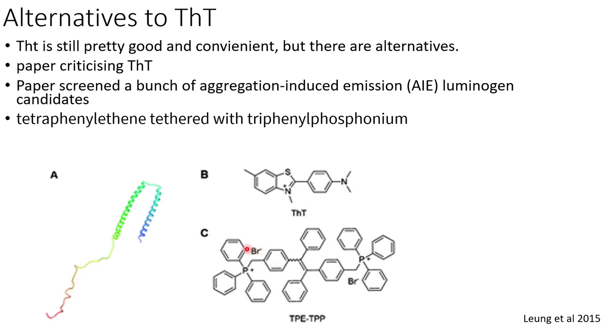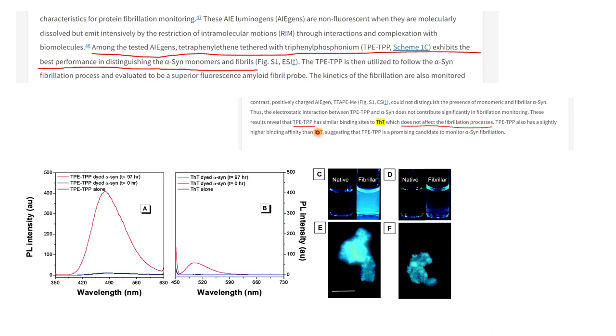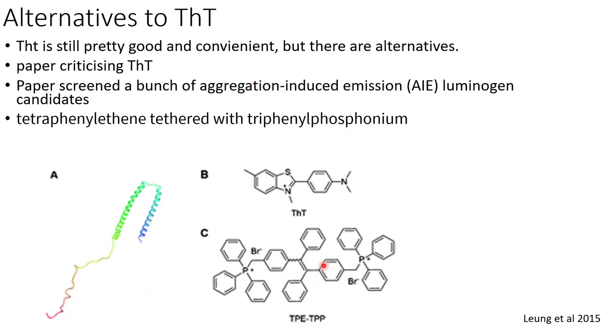You've got triphenylphosphonium over here and here, and then the tetraphenylethene is this part. But yeah, they basically said that tetraphenylethene tethered with triphenylphosphonium, TPE-TPP, is basically way better performance than ThT. They had a figure in their paper where the intensity was much higher compared - so this is the new candidate, this is TPE-TPP and this is ThT, and intensity is much better.